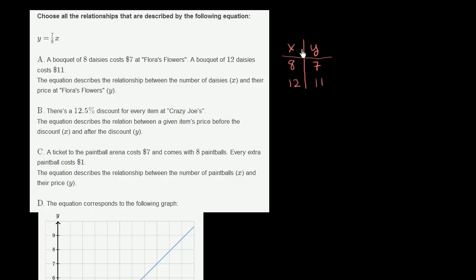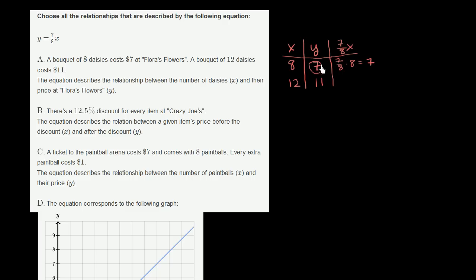Let's see whether this relationship is the same as y equals 7 eighths x. So if we take 7 eighths times 8, that's going to be 7. So 7 over 8 times 8 is equal to 7. This checks — 7 eighths x gives the same price as the first data point. So far, these two seem consistent based on this first data point.